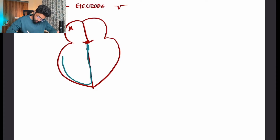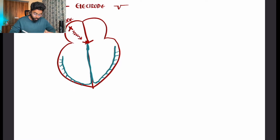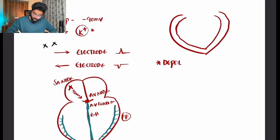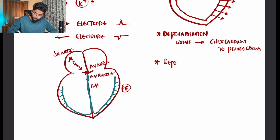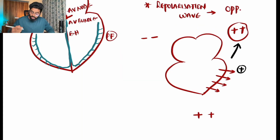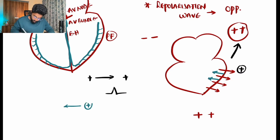The SA node has automaticity. When activated, the current moves along the atrium, activates the AV node, which stimulates the AV bundle, then Bundle of His, and finally to the ventricles via Purkinje fibers. The depolarization wave moves from endocardium to pericardium. The repolarization wave moves in the opposite direction.